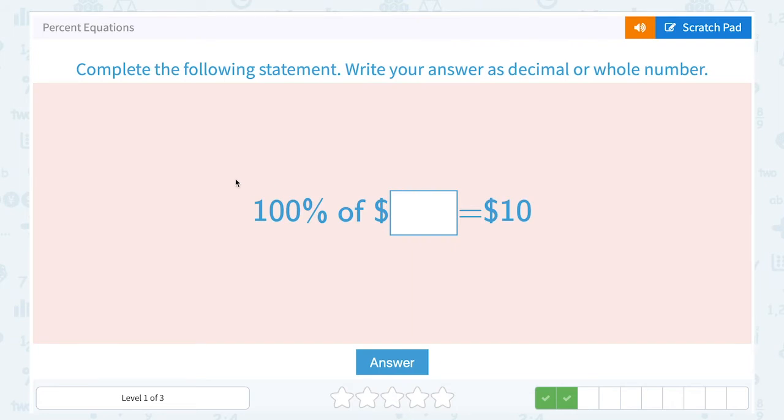100% of some number equals 10. Okay, we can write an equation here. But you might also be able to do this one off the top of your head if you remember 100% means the whole thing. So the whole thing of some number is 10. Well, doesn't that mean that 10 is the whole thing?